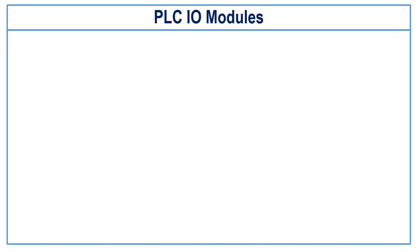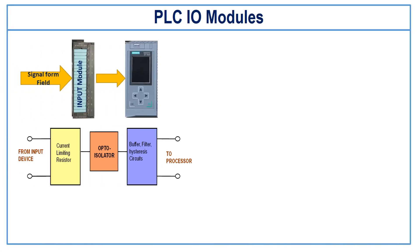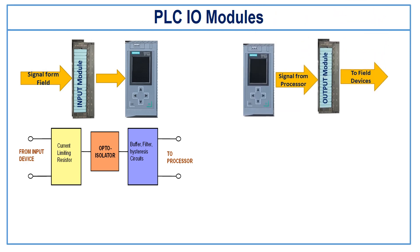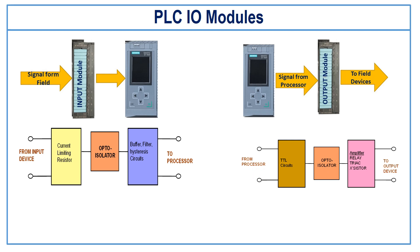The input modules receive the input signal from the field devices and convert them to a level so that the processor can understand them. And the output modules convert the output signal of the processor to a level which is capable of driving the connected field devices.